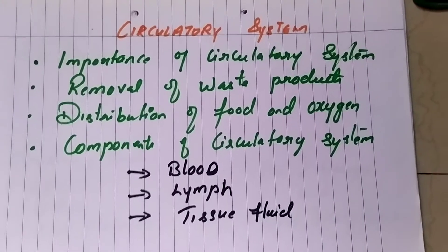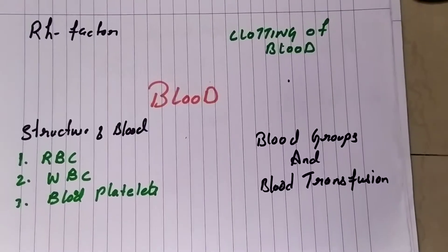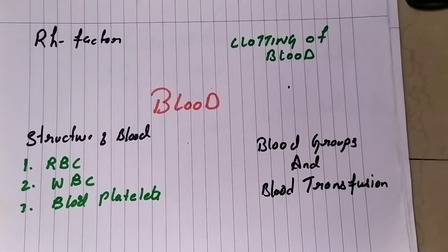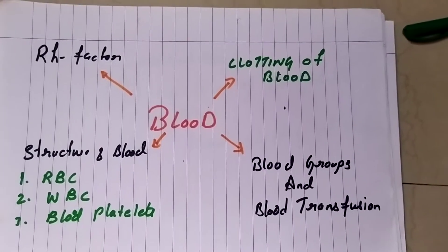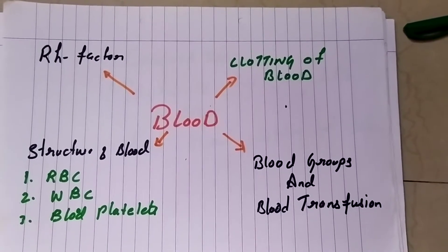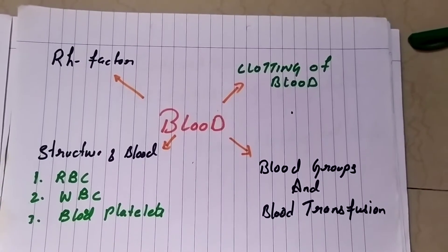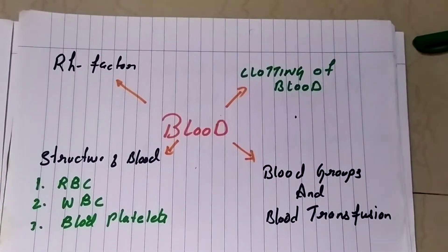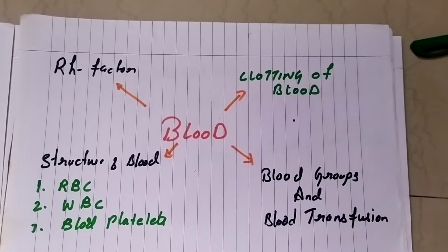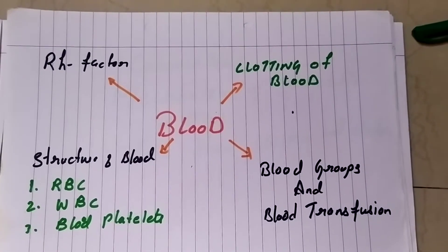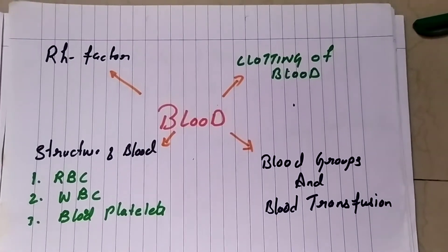Let us go into detail one by one. As you can see here, this is the blood, which we are going to study in detail — its structure, how blood groups are differentiated, why blood clotting takes place, and what RH factors are. Body fluid in our body occurs in three forms: blood, lymph, and tissue fluid. Blood circulates through the heart and blood vessels; lymph flows through lymph vessels and lymphatic organs; and tissue fluid, also called interstitial or intercellular fluid, surrounds the body cells.